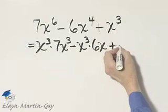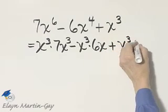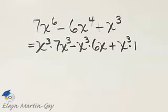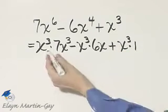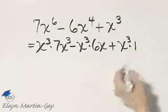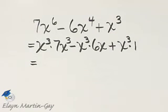Plus, I'll simply write x cubed times 1. That will give me x cubed. Now, you can check by multiplying each time, but I haven't changed the meaning of this trinomial.